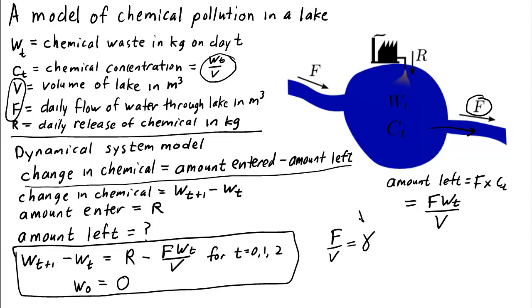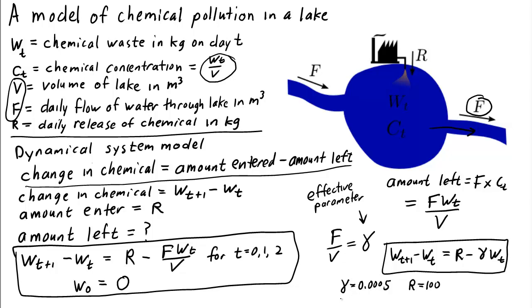So sometimes we might replace the ratio f over v with just a single parameter. Let's call it gamma, the Greek letter gamma. This is an effective parameter. Using gamma rather than f over v allows us to write the dynamical system more compactly, so that the change is just r minus gamma times w sub t. You can calculate from the parameters given that gamma is 0.0005, and we know that r is 100. So the values of these two parameters are all we need to know in order to evolve our dynamical system.